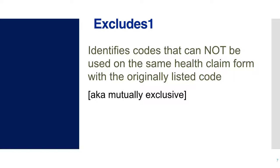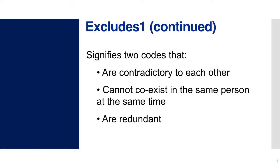You will see an Excludes 1 notation that identifies a mutually exclusive condition. This Excludes 1 may list a condition beneath the code for a different condition, and it is saying that one person cannot have these two things at the same exact time. To simplify it: the two conditions — the one for the code that's there, and the one in the Excludes 1 notation — are contradictory to each other, cannot coexist in the same person at the same time, or are too close to each other and therefore redundant.